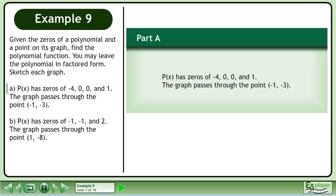In part a, P(x) has zeros of negative 4, 0, 0, and 1. The graph passes through the point (-1, -3).